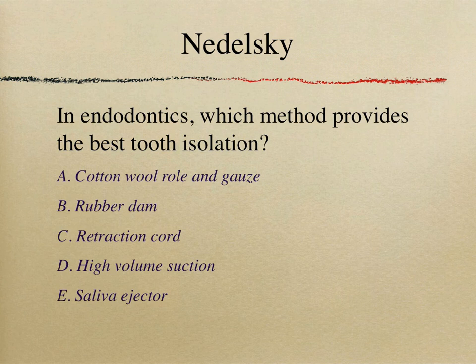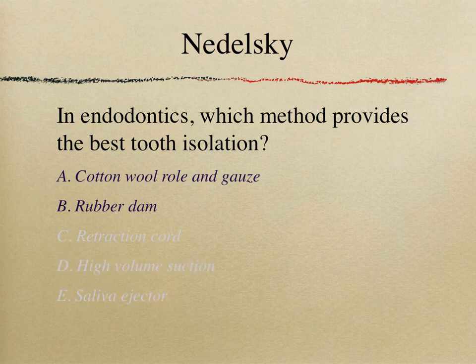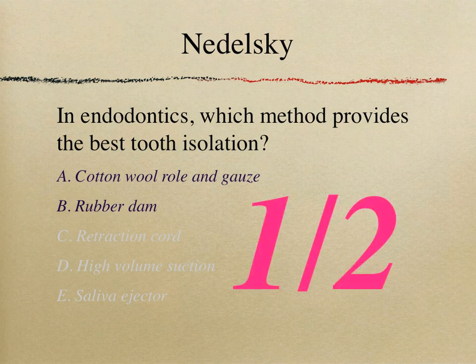A borderline candidate might look at option A — cotton wool roll and gauze — and think that could be used for endo isolation. Rubber dam, probably yes. Retraction cord they can probably eliminate, and similarly high volume suction and saliva ejector can likely be eliminated. So a borderline candidate would be choosing between one of two options — a one in two, or 50%, chance of answering correctly.